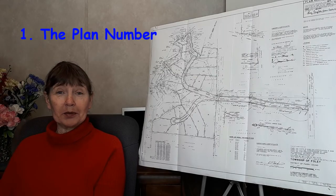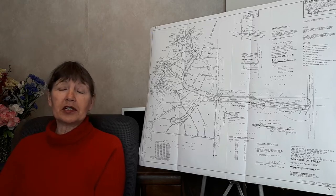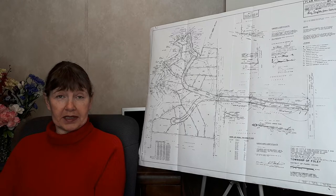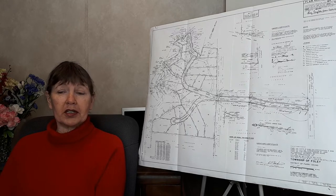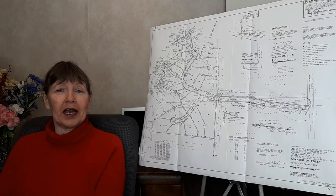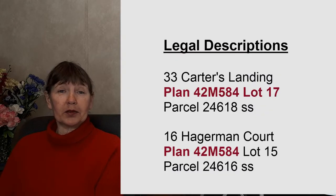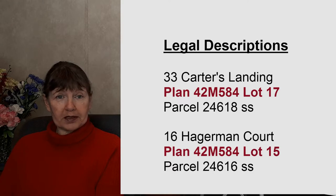First of all, the plan number. You can find the plan number in the legal description. I would suggest you contact the real estate agent and ask them for a copy of the legal description — and the best would be a copy of the deed. If you'd like to learn more about reading a deed I suggest you take a look at episode 28, Doing the Deed. Once you get your legal description, it will tell you what the plan number is and the part numbers describing the property that's listed for sale.